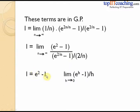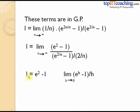Thus the value of I, which is the integral of e^(2x) from 0 to 1, is equal to e² minus 1.